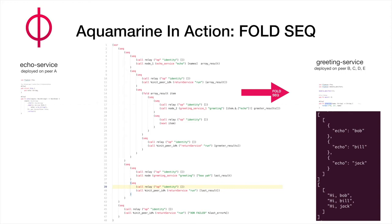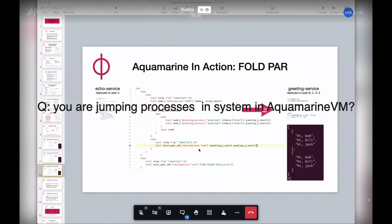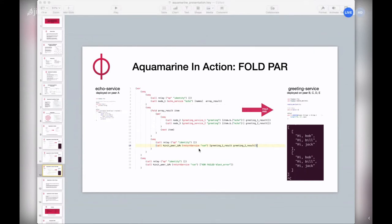Once it's released into the network, it travels according to the path you give it — you programmatically specify it. The logic to route, the resolution logic, is on each of the nodes. An Aquamarine VM is on every node.